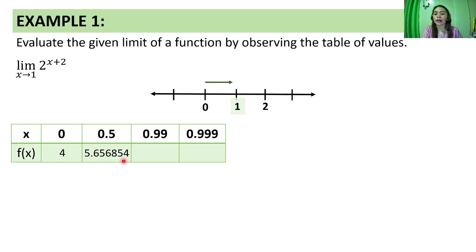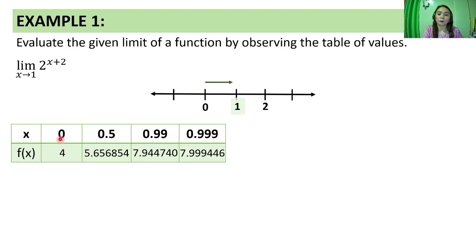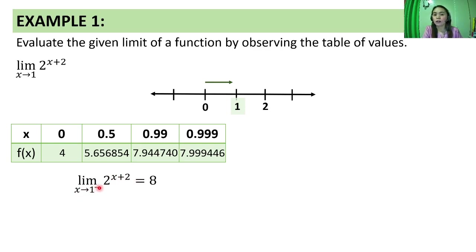Upon doing that, here are the computed function values. By observing this table of values, habang lumalapit yung x dun sa constant na 1, the f of x values approach 8. Therefore, the limit of 2 raised to x plus 2 as x approaches 1 from the left is equal to 8. That is one of the one-sided limits we need.